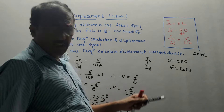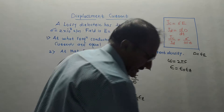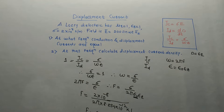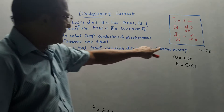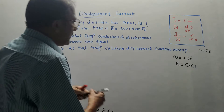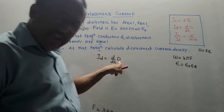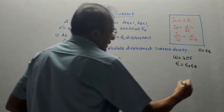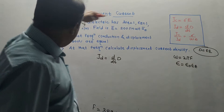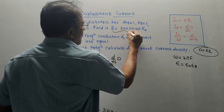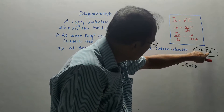The second part asks us to calculate JD, the displacement current density. Using the formula JD equals d/dt of D, and since D is related to E by D equals epsilon times E, we write D as epsilon_0 times epsilon_r times E. Since epsilon_r equals 1, we write JD as d/dt of epsilon_0 times E, where E is given as 200 sin(ωt).